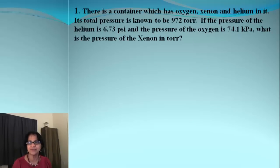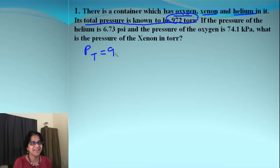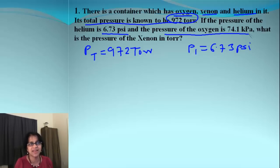So, let's actually solve this first problem for Dalton's gas law. What is it? Okay, it says we have three gases and then the total pressure is given to be 972 torr. That's bingo! We got Pt as 972 torr. And then, what else is given? If the pressure of helium is 6.73, let me write down as my first pressure P1, 6.73 psi. And then, if I keep on reading, it says pressure with second gas oxygen is 74.1 kPa. And, we need to find out the pressure of the third gas, xenon.